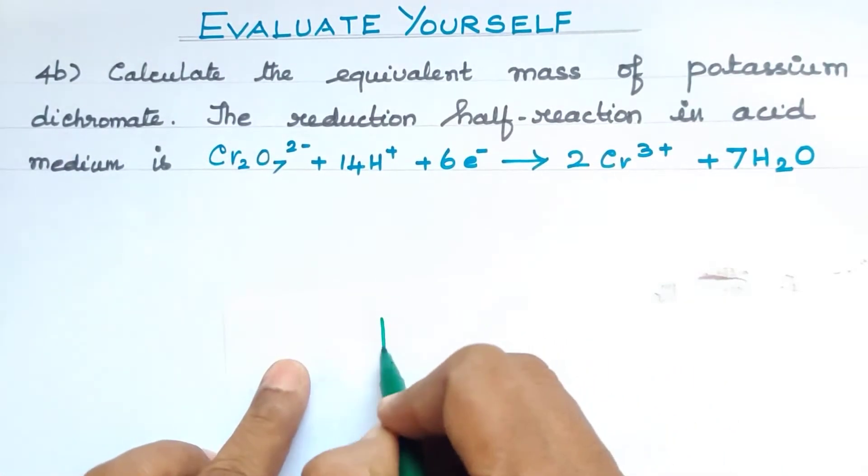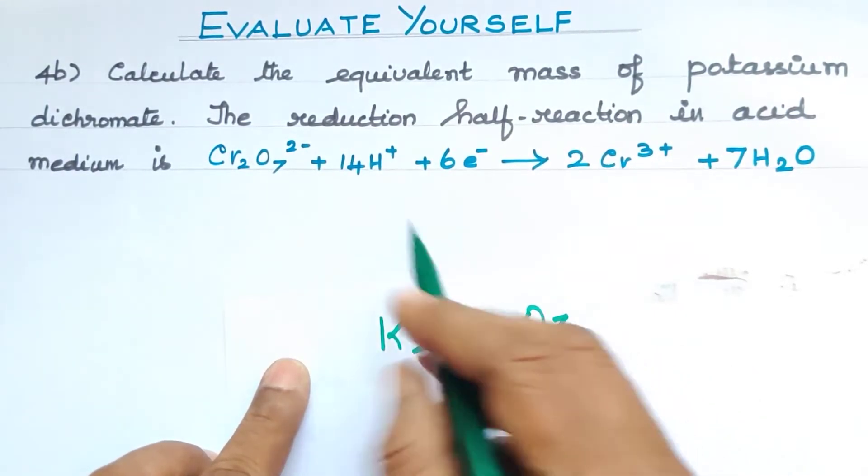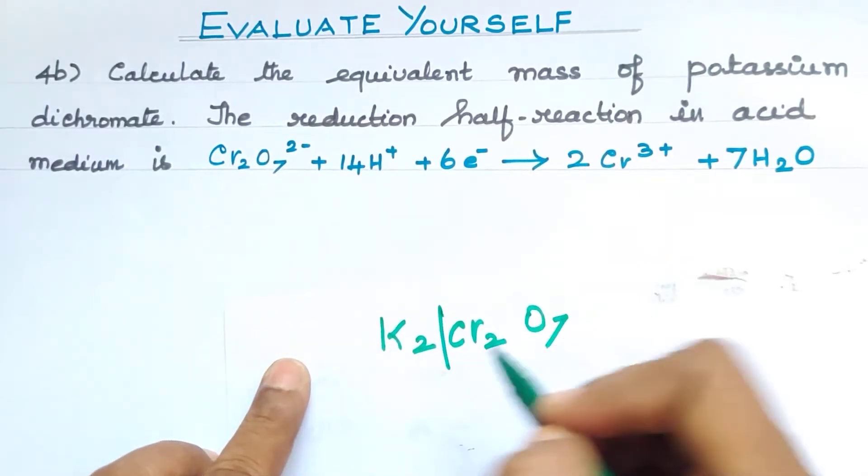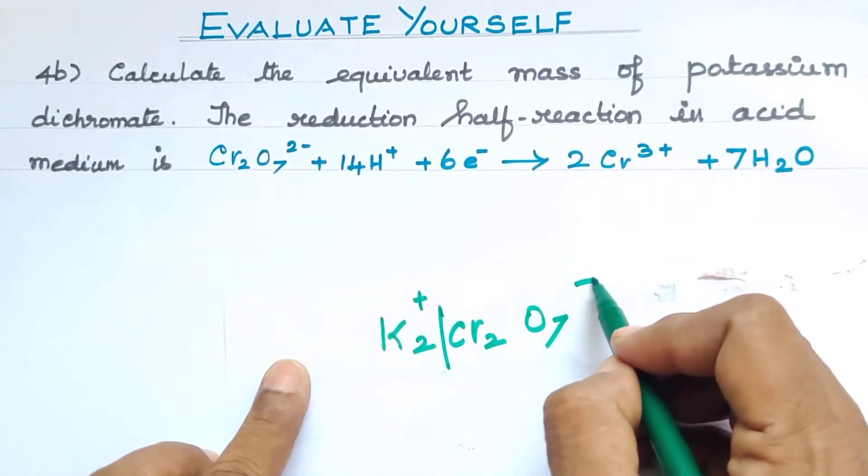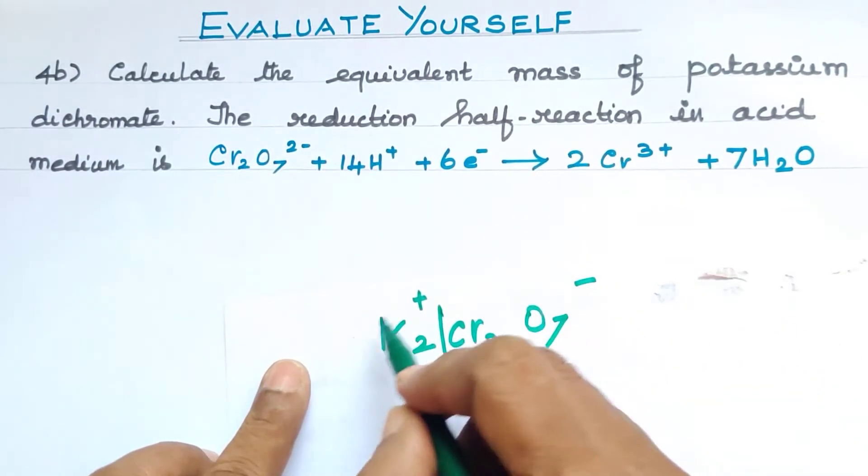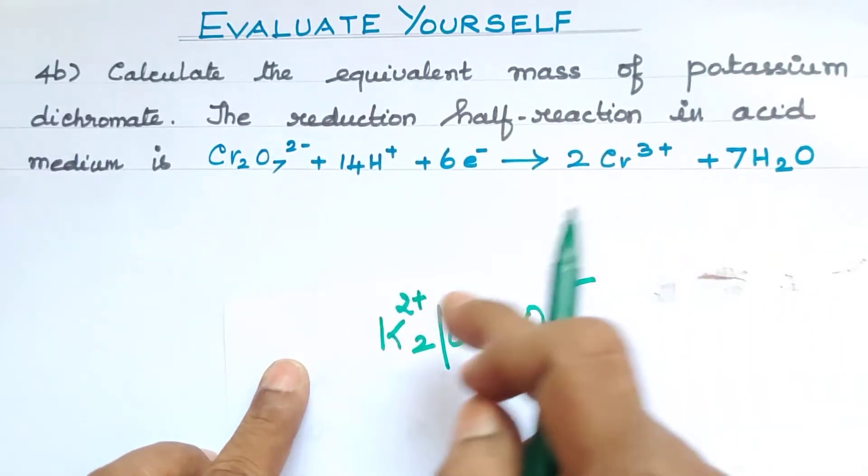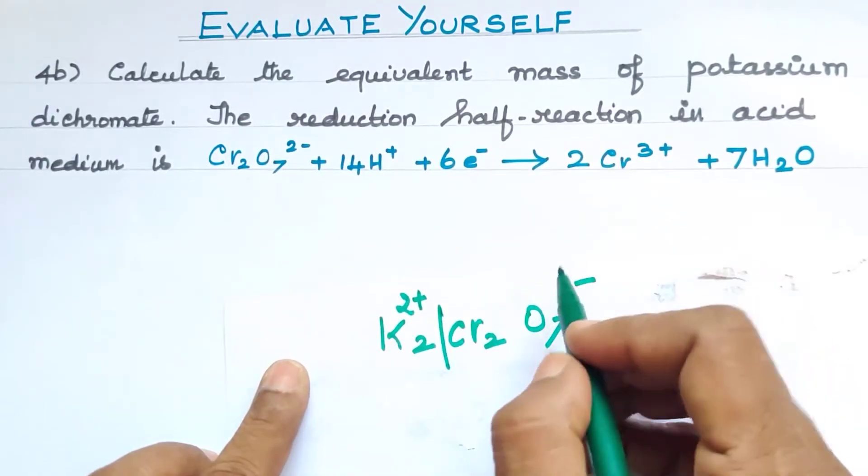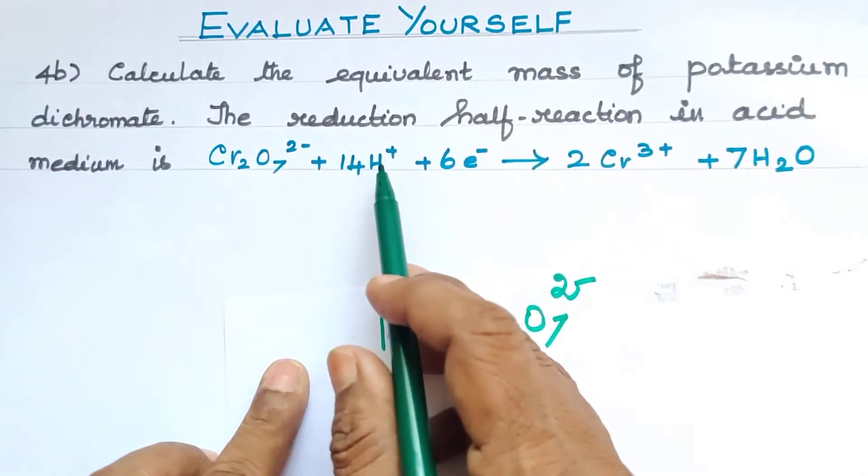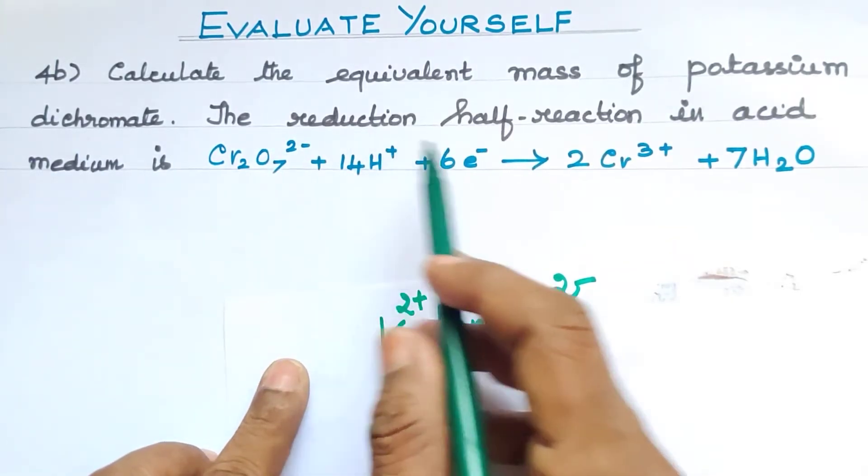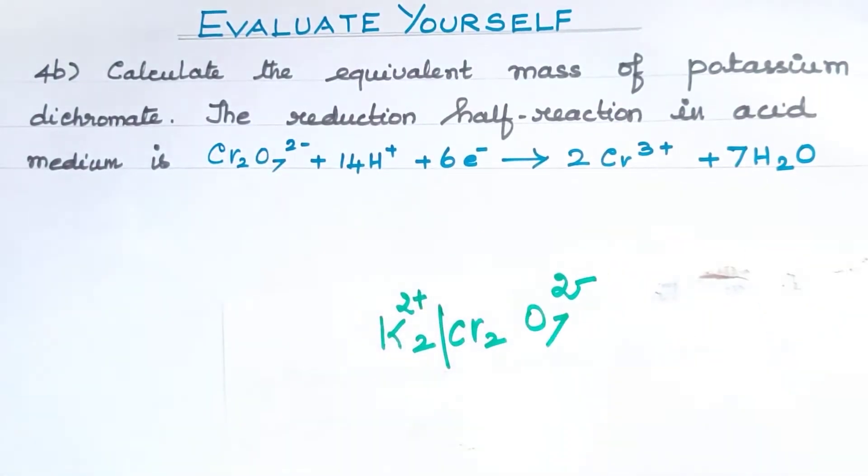Potassium dichromate's formula is K2Cr2O7. This is the anionic part in the acid medium. It reacts with H+ in the substance. Electrons are accepted.